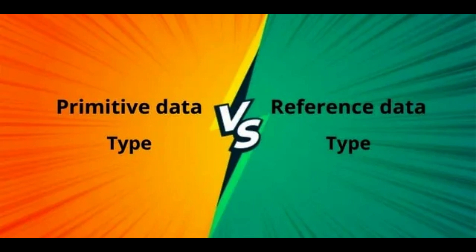Key Differences — Storage: primitive types store the actual value directly, while non-primitive types store a reference to the data's location in memory. Mutability: primitive types are usually immutable, while non-primitive types are often mutable. Examples: primitive types include simple values like numbers and characters, whereas non-primitive types encompass more complex data structures like arrays and objects.